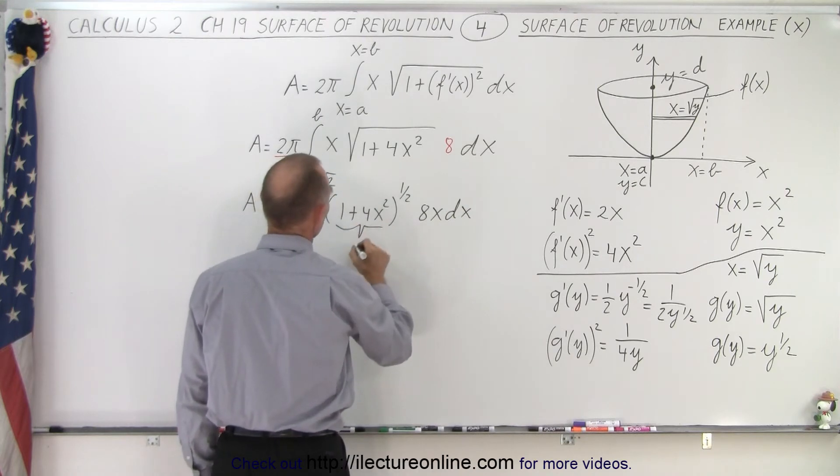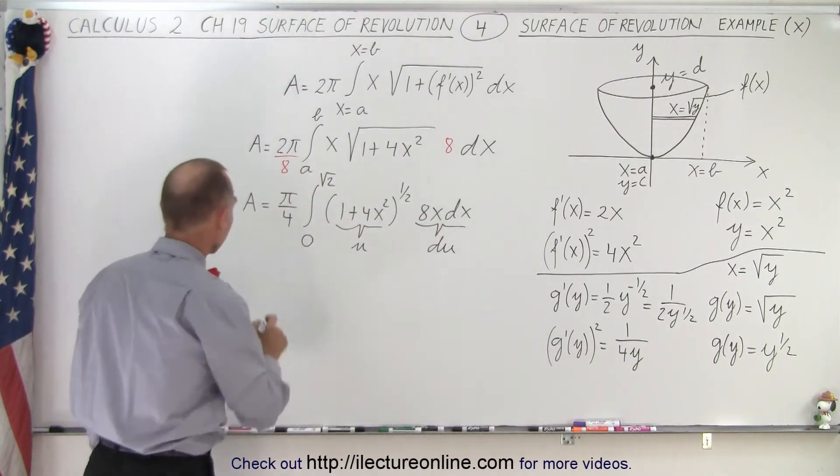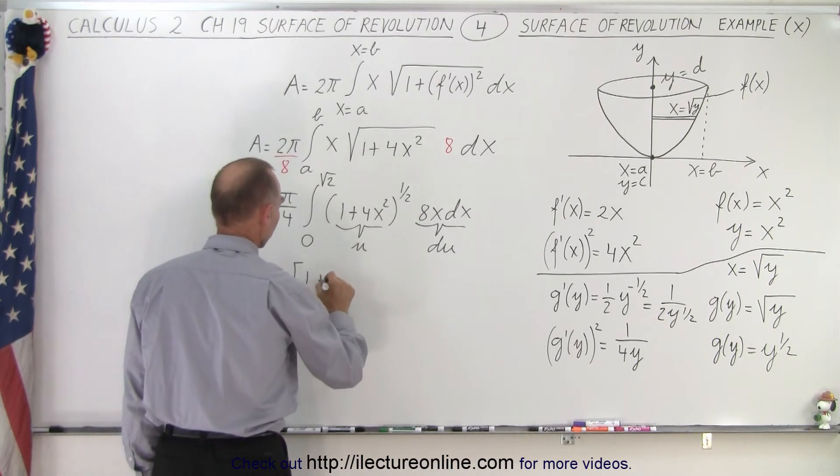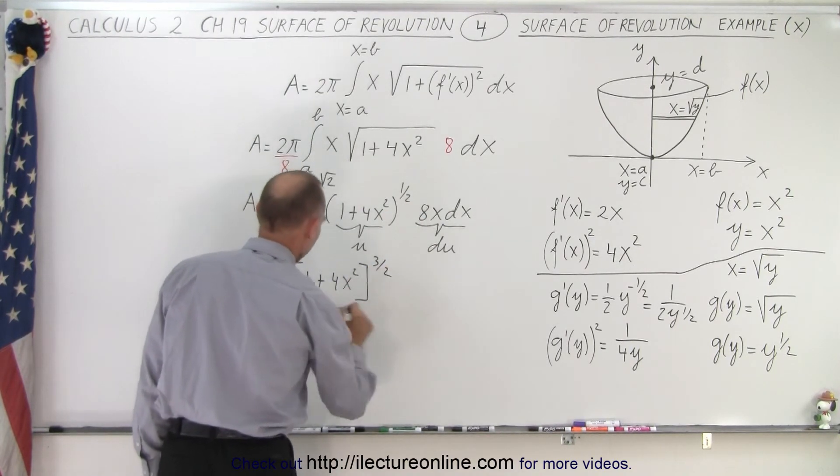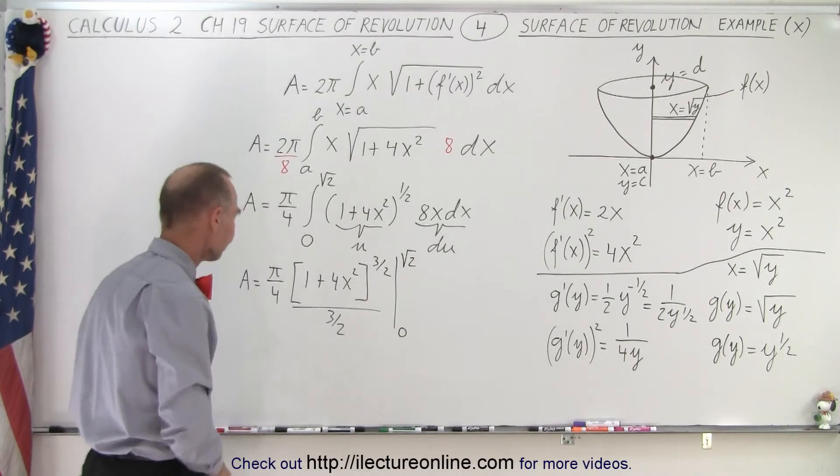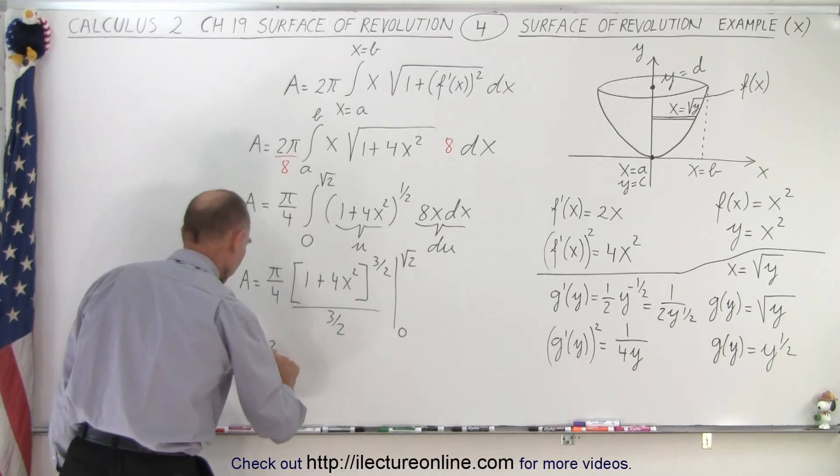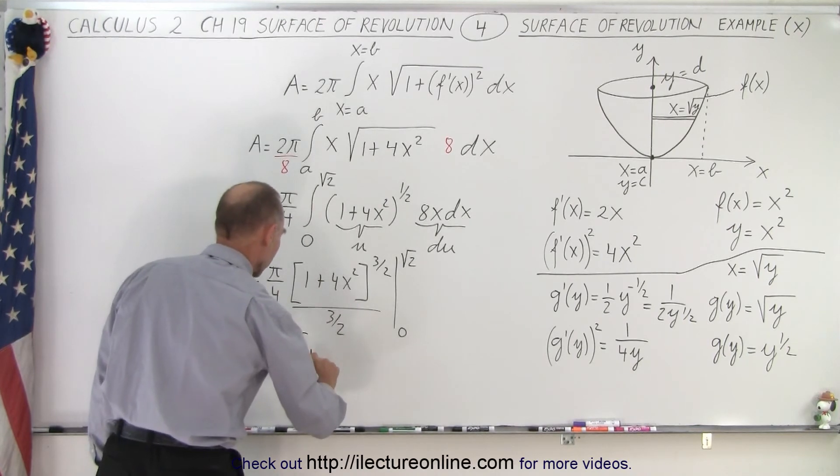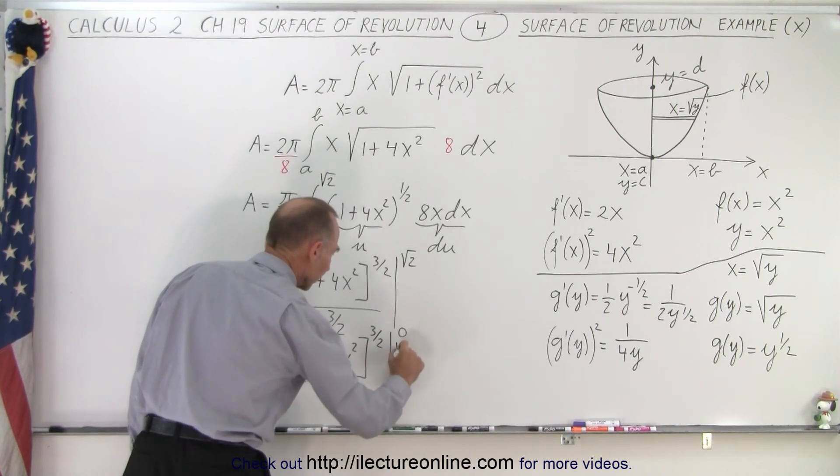And so we have the quantity 1 plus 4x squared to the 1/2 power times 8x dx. And so if this quantity here is u, then this quantity right here is your du, and so that's how you're able to integrate that. That gives us A is equal to π over 4 times the quantity 1 plus 4x squared to the exponent plus 1, which is now 3/2, divided by the new exponent 3/2, and evaluated from x equals 0 to x equals the square root of 2.